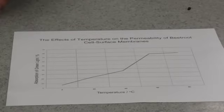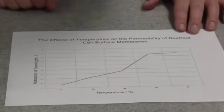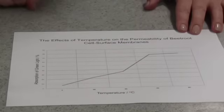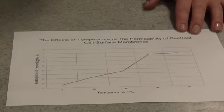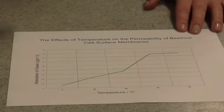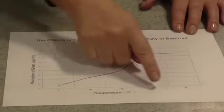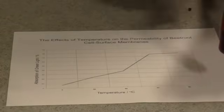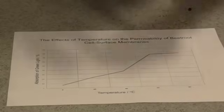This is the kind of graph you should get. On the X-axis we have our independent variable, which is temperature — our range of temperatures. On the Y-axis we have our dependent variable, which is the absorbance of green light as a percentage of the light absorbed. You can clearly see that the higher the temperature, the more red leaked out — the more green light has been absorbed by the sample.